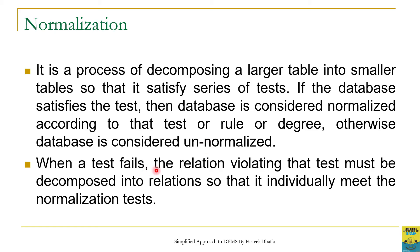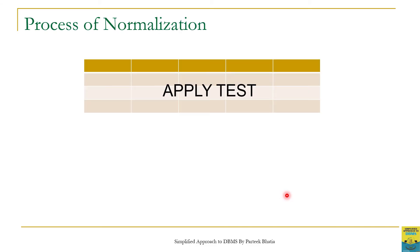When a test fails, the relation or table violating that test must be decomposed into smaller relations. We decompose the larger table into smaller tables if the test fails. Our objective is to obtain tables that individually meet the normalized test. In this process we start with the larger table, apply some test, and if the table fails we decompose it into smaller tables so that individual tables clear all those tests.